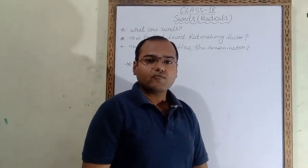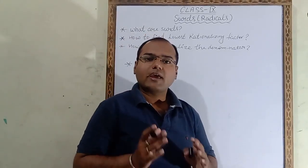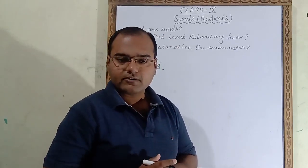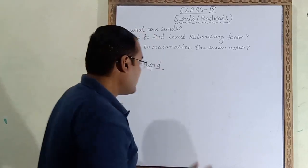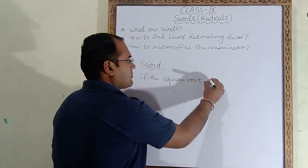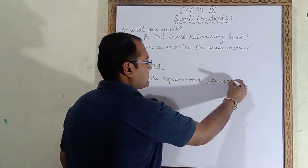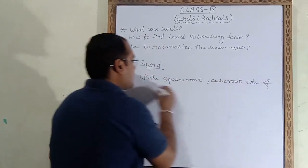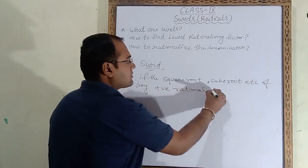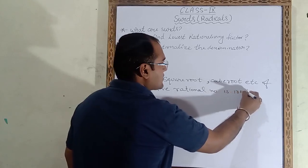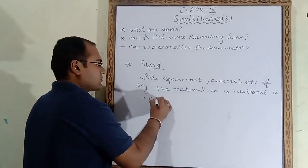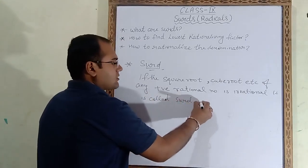So what are surds? If the square root, cube root, etc. of any positive rational number is irrational, then we will call it a surd or radical.